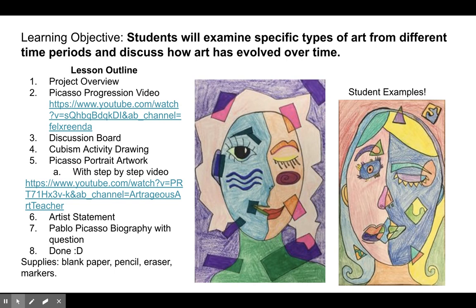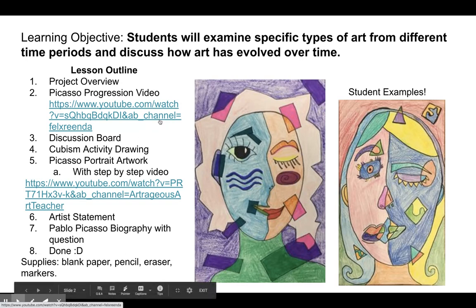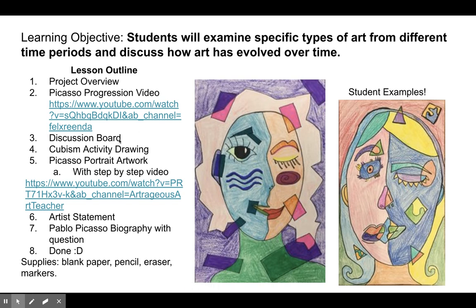Pablo Picasso was an artist in the early 20th century, so things have changed a little bit since then. You're going to watch a video that shows the progression of his style, and then you're going to add something to the discussion board about what you learned from that video. You're going to have a short cubism activity drawing, and then we're actually going to start on the main project for this lesson, which is a Picasso portrait artwork — and you can see student examples here.